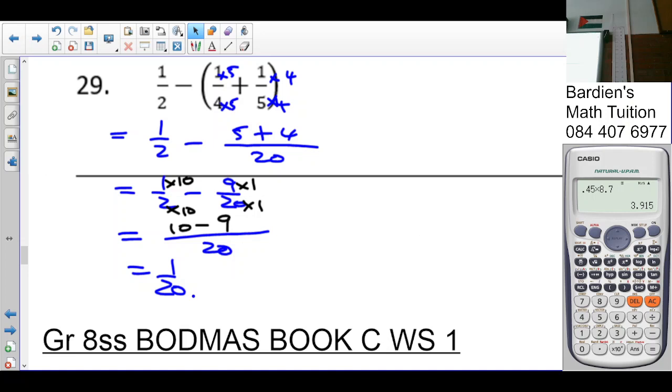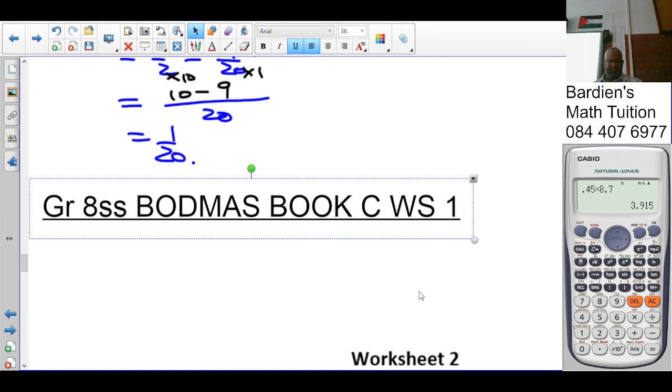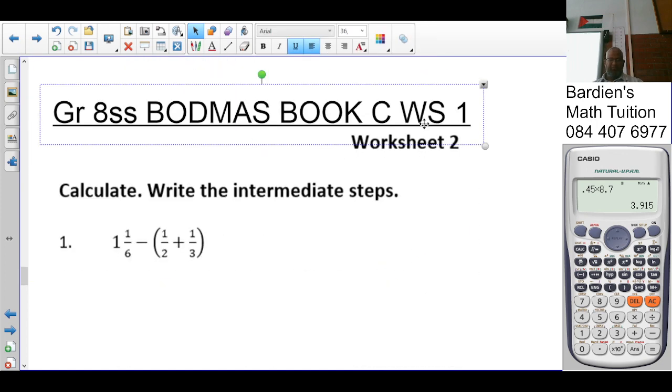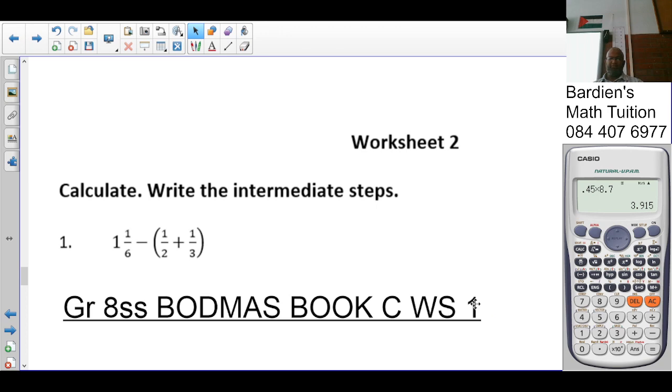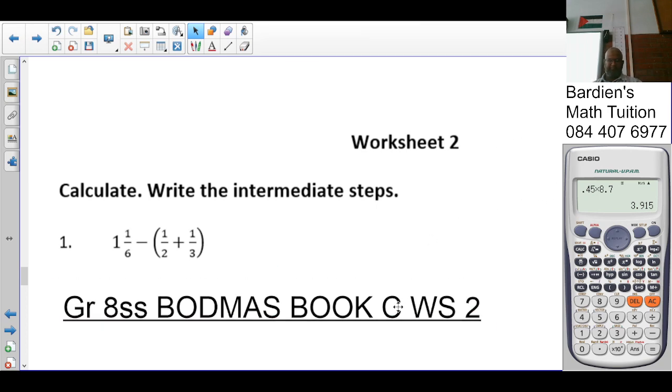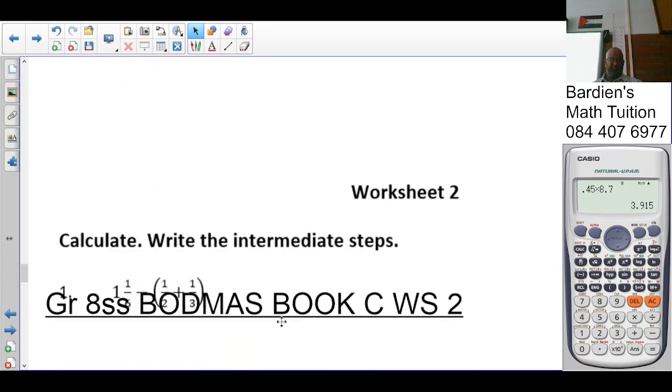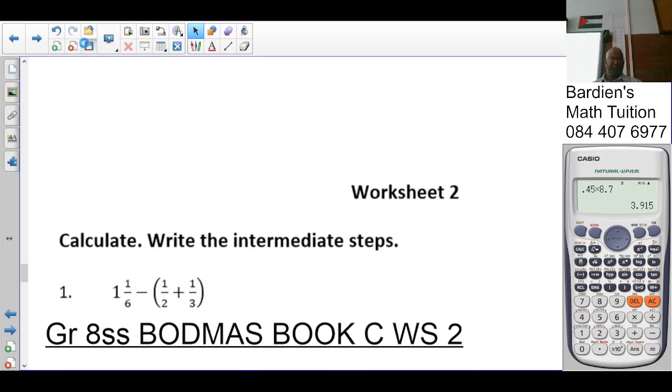So that brings us to the end of Book C Worksheet 1. Homework. Book C Worksheet 2. Okay. Odd numbers. And then Book C Worksheet 1, even numbers. That was a quick worksheet. Ten minutes.